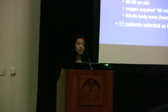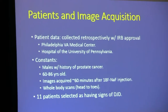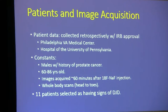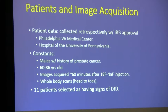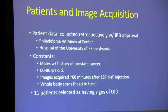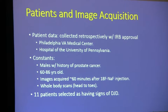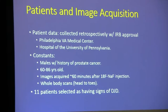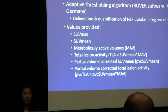Patient data was collected retrospectively with IRB approval from the Philadelphia VA Medical Center and the Hospital of the University of Pennsylvania. Each patient was a male with a history of prostate cancer; however, the scans we selected had shown little to no signs of metastasis. Each patient ranged from 68 to 86 years old, and a total of 11 patients were selected as having signs of degeneration in their joints.